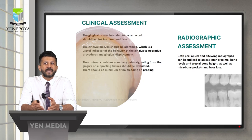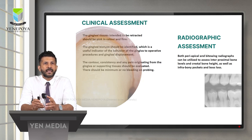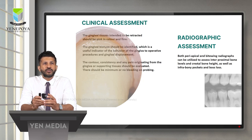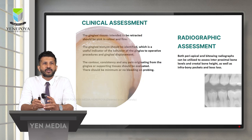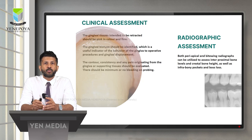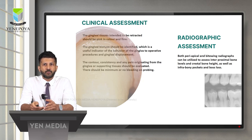Clinically, the gingival tissues intended to be retracted should be pink in color and firm. The gingival biotype should be identified, which is a useful indicator of the behavior of the gingiva to operative procedures and gingival displacement. The contour, consistency, and any pain originating from the gingiva or supporting tissue should be evaluated, and there should be minimum or no bleeding on probing. Radiographically, both periapical and bitewing radiographs can be utilized to assess the interproximal bone level, crestal bone height, infrabony pockets, and bone loss.